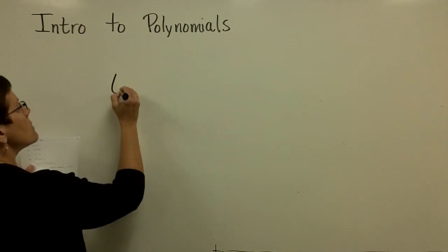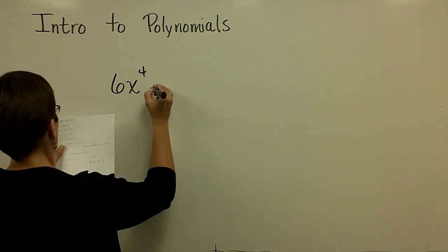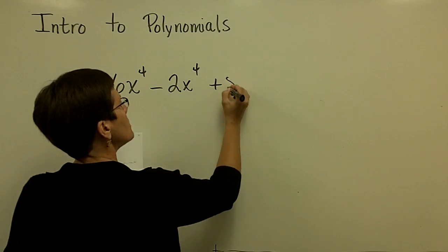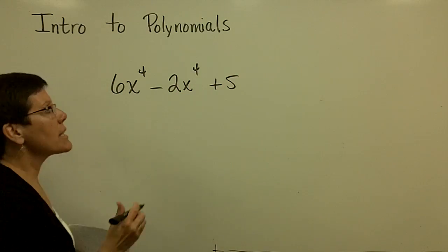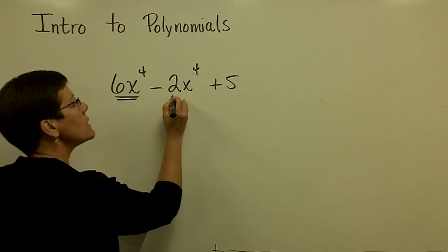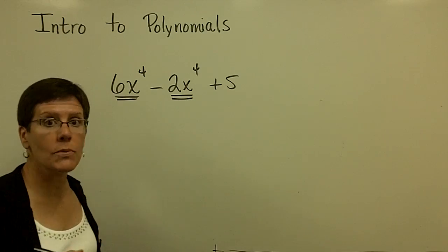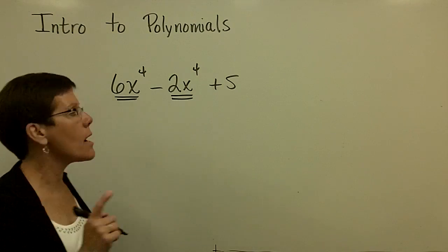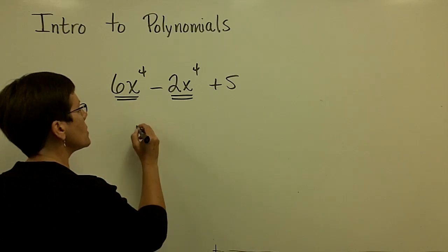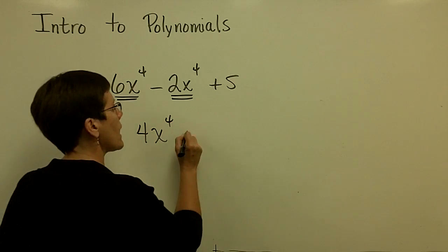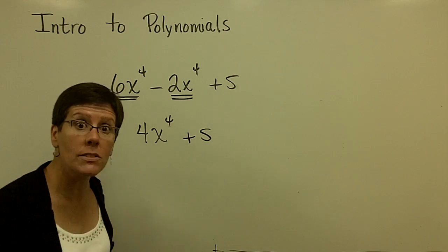Let's go with 6x⁴ - 2x⁴ + 5. And I want to collect my like terms. This one and this one are called like terms. I take their coefficients and subtract them. So 6 - 2 is 4 of those x⁴ and I bring down my + 5. And I'm all done. I've collected my like terms.